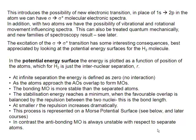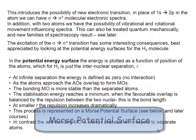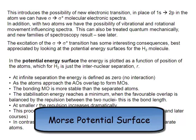Of course, at some point R is going to become very, very small, and at that point you're trying to push the nuclei of the two atoms close together. There's going to be a very strong repulsive interaction resisting that, and so the energy is going to shoot back up again. If we plot that kind of potential energy surface, we end up with a shape that we call the Morse potential surface.